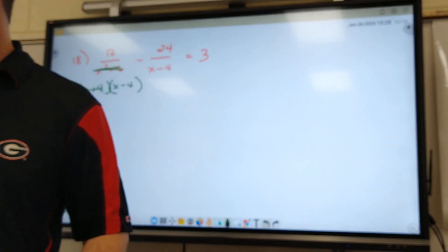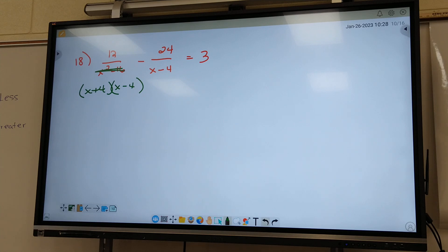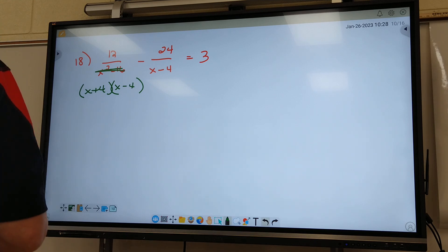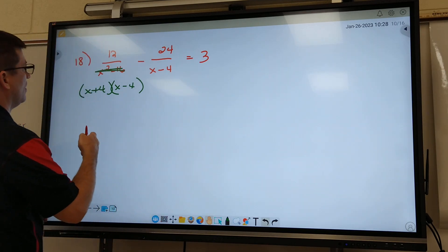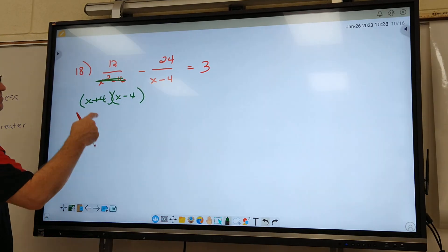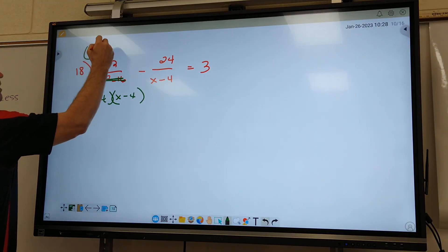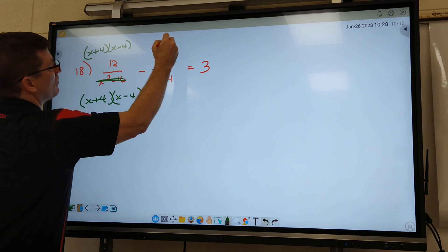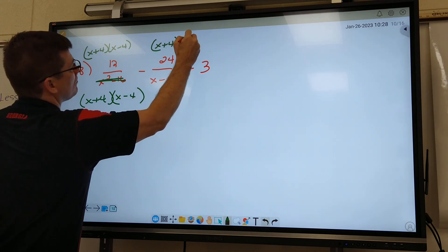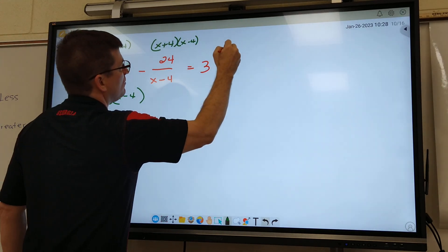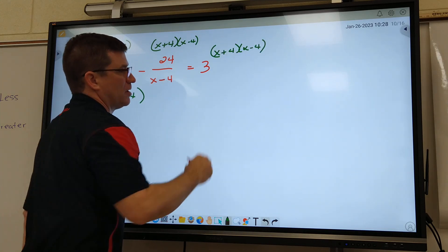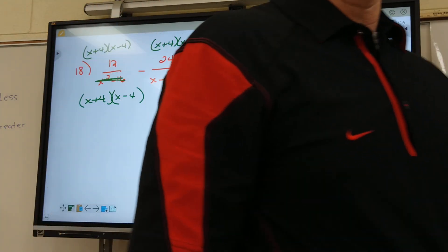On these last three, you're going to have to factor something first. Now do your common denominator. What is our common denominator on this one? Got to use one of everything on the bottom, so I've got to use X plus 4 and X minus 4. Go from there — do your crossing out now.